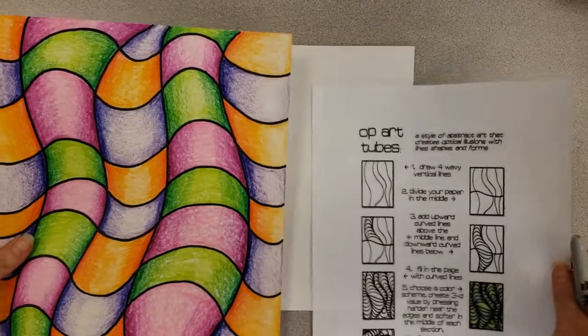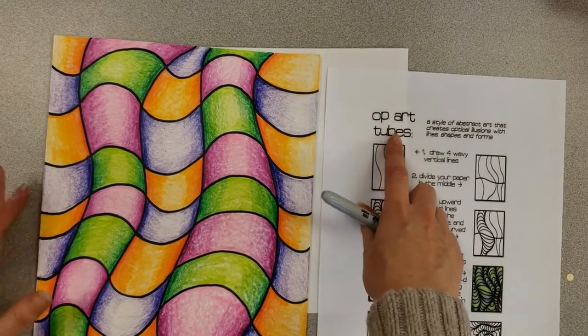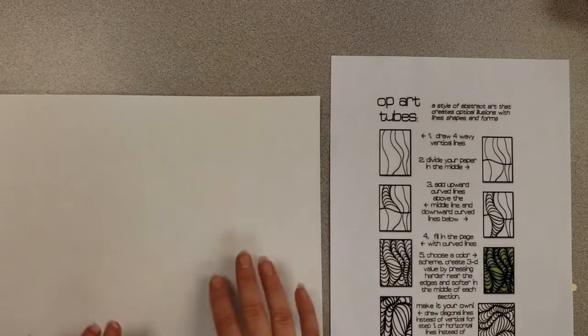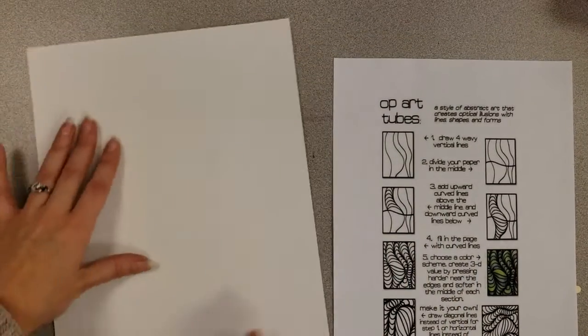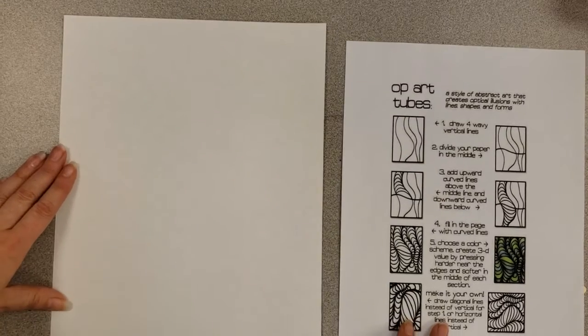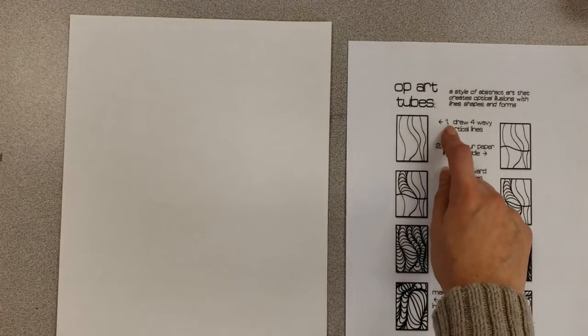I have two styles of optical illusion art and in this video I'm going to be showing you the tubes style. So I have this paper for you and in this paper it shows the page being held vertically or portrait. So I'm going to hold my paper that way and I'll start with the first step.